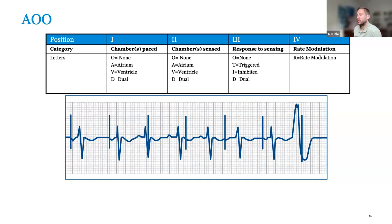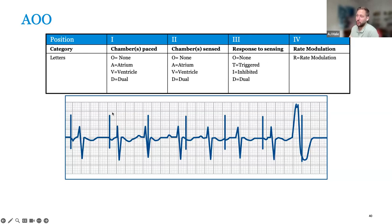AOO is very similar to VOO but pacing in the atrium instead. It paces in the atrium no matter what at the set base rate, senses nothing, and does nothing in response. You have an atrial pace, a negative P wave indicating captured atrial event, then it waits, times out, paces again. If an intrinsic atrial event occurs, the device is blind and paces anyway — that's functional non-capture. AOO can still be pro-rhythmic, but kicking off AFib is a lot less dangerous than kicking off V-fib. If the patient has good conduction, AOO is an option for surgery or if you have a lot of atrial over-sensing.